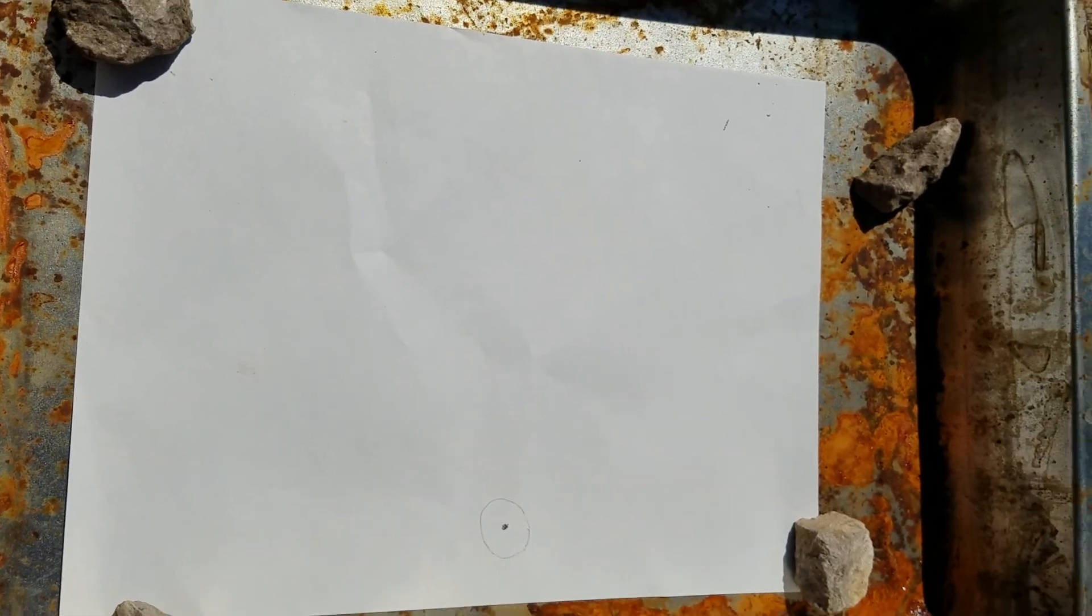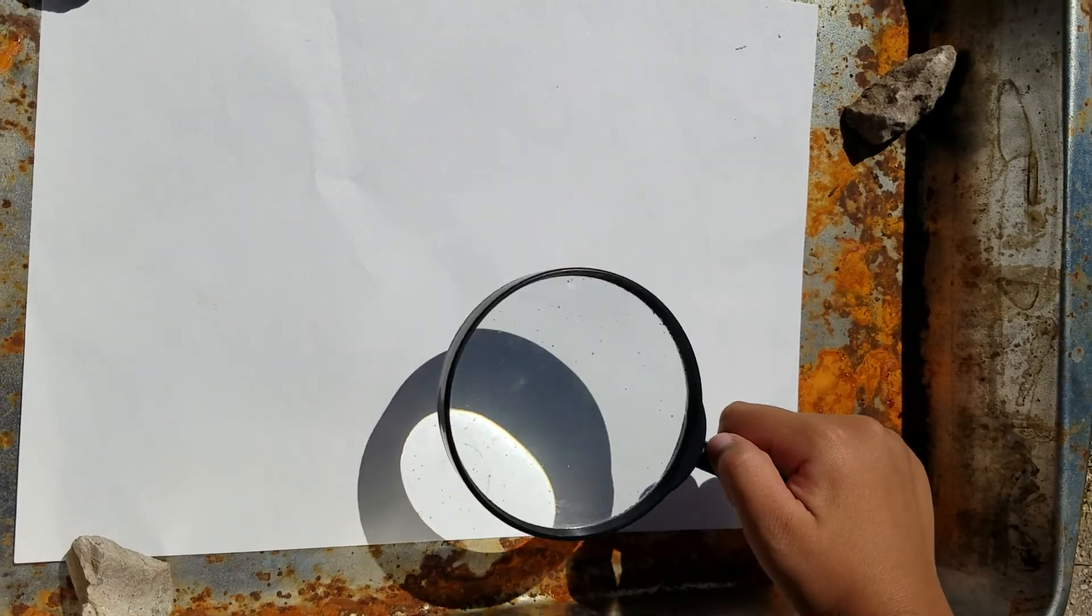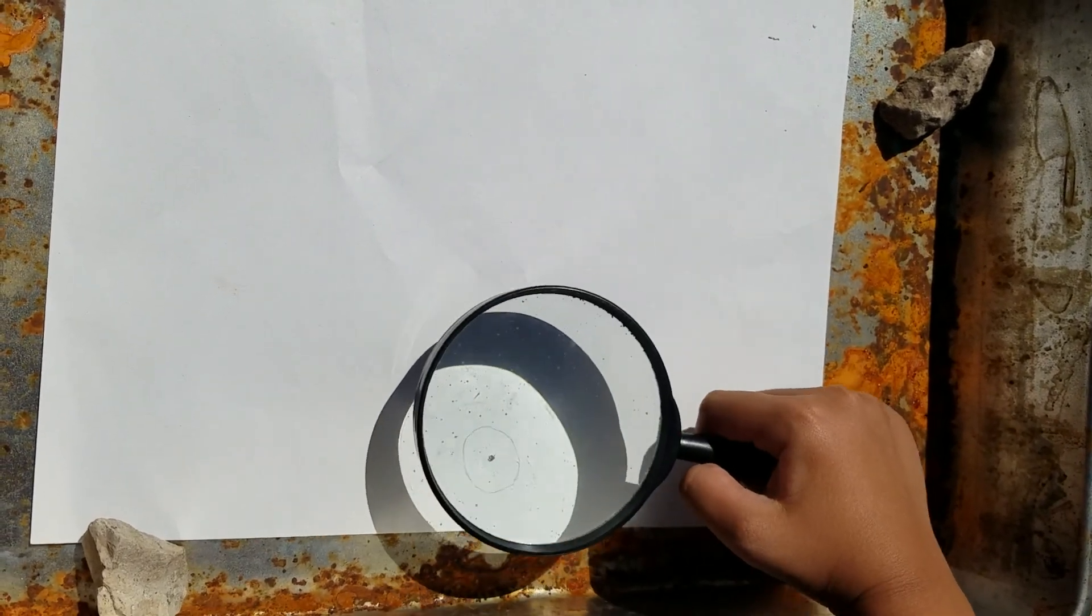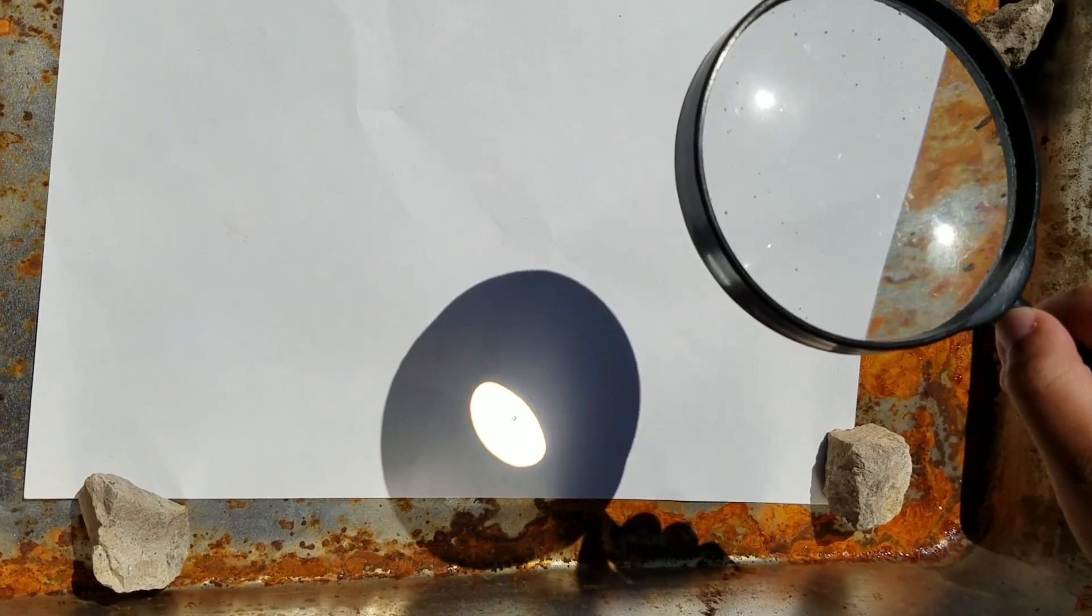Let's go ahead and start the experiment and get the magnifying glass. Make a big circle with it and then make a smaller circle. I put a little pencil mark there and we're going to see how long it takes to burn.